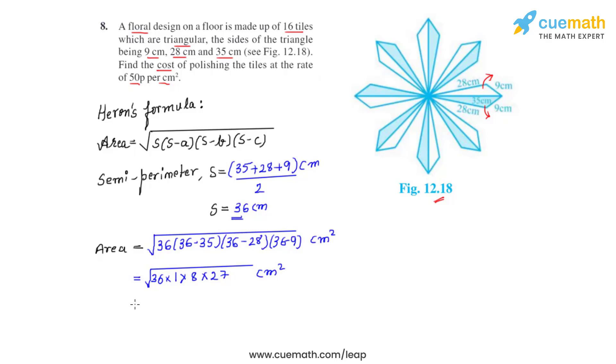This gives us 36 root 6 centimeter square. If we substitute the value of root 6, we get the area of one such triangular tile to be equal to 88.2 centimeter square.